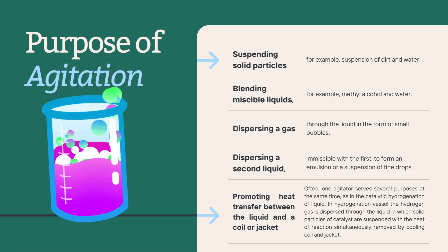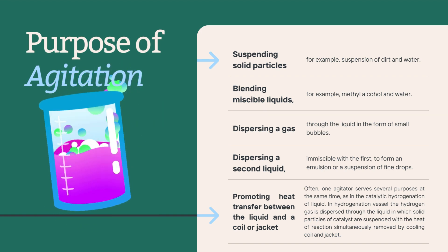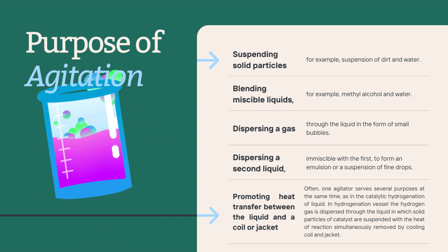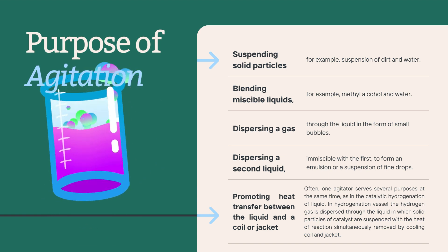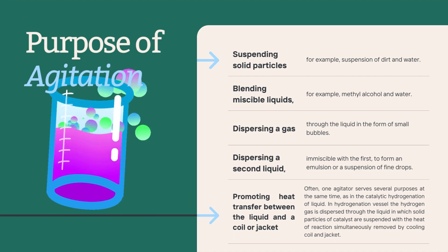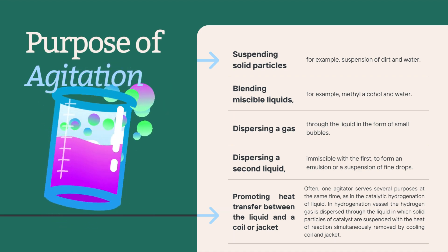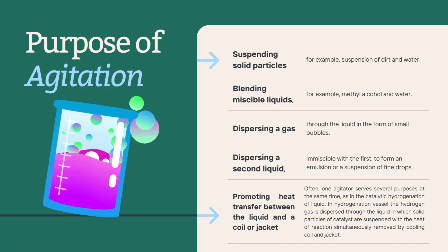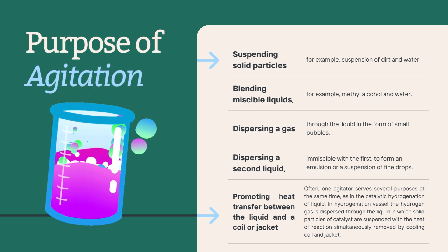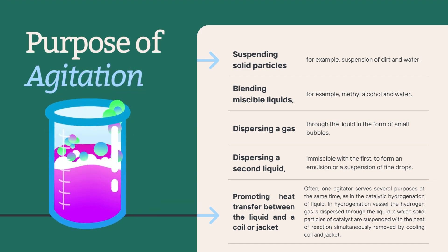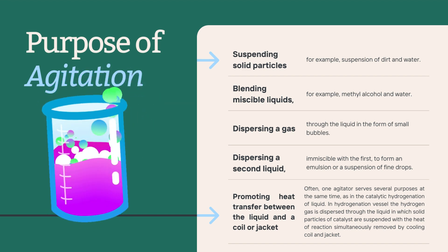An example of blending miscible liquids includes methyl alcohol and water — it is like mixing oil and vinegar in a salad dressing to create a homogeneous mixture. The third purpose includes dispersing a gas through a liquid in the form of small bubbles, like the bubbling action in a fish aerator, which ensures oxygen distribution for the fish.